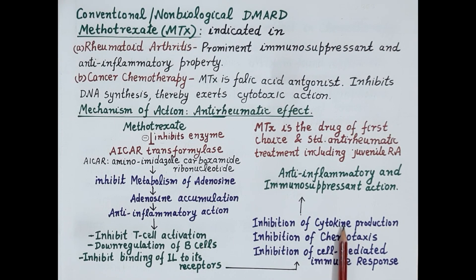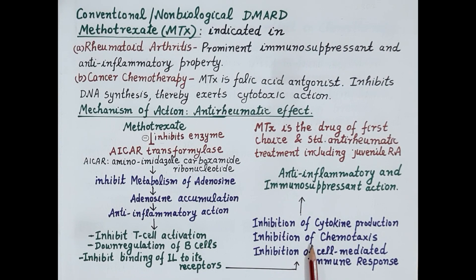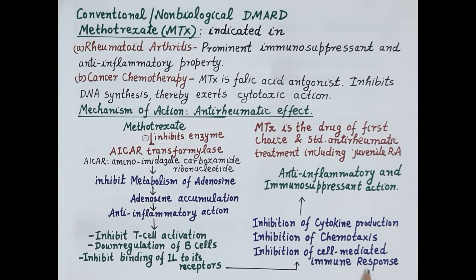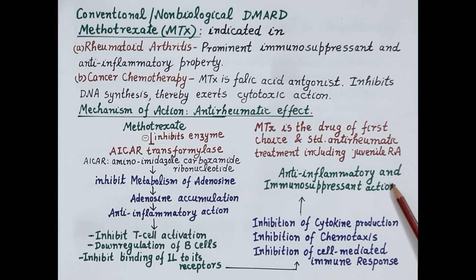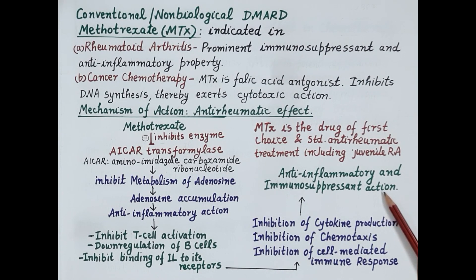In a nutshell, methotrexate inhibits production of inflammatory cytokines, causing inhibition of chemotaxis. It also inhibits cell-mediated immune response, primarily causing rheumatoid arthritis. This is how methotrexate produces anti-inflammatory and immunosuppressant action, making it a first-line treatment in moderate to severe rheumatoid arthritis.